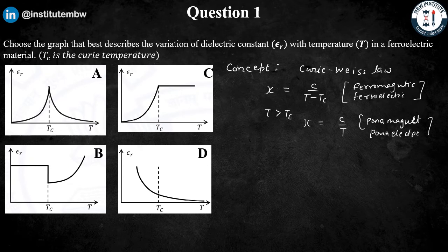In case of ferromagnetic material, when T becomes greater than TC, the ferromagnetic substance becomes paramagnetic. Similarly, in case of ferroelectric material, when T is greater than TC, the ferroelectric substance will become paraelectric.